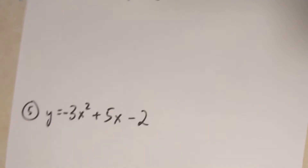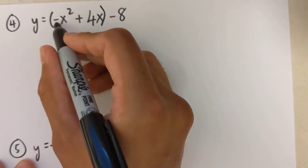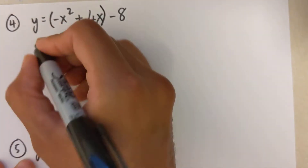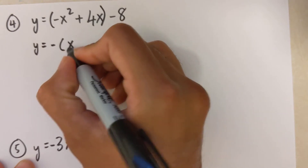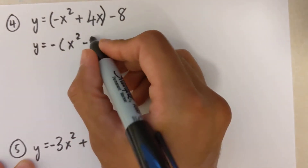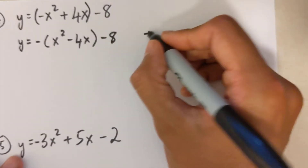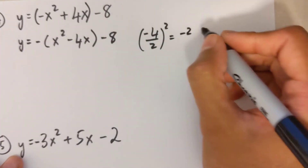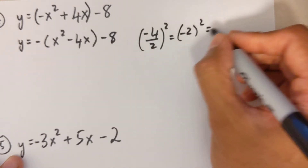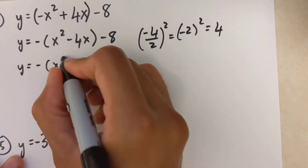For the fourth — even harder — example, I have a negative a value that I factor out first. So y equals negative 1 times x-squared minus 4x, minus 8 outside. Writing negative 4 on the side: divide by 2 to get negative 2, then square it to get positive 4.